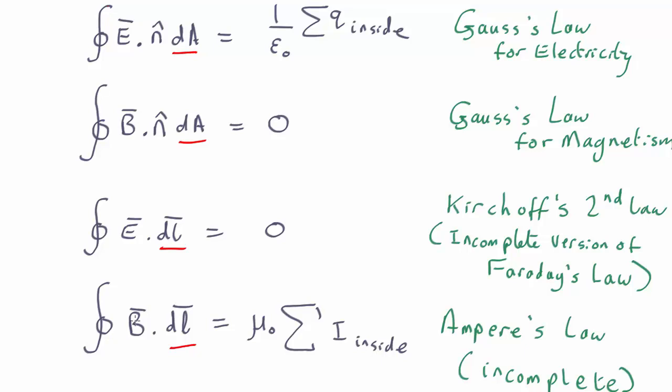And then you get the same thing for magnetic fields, which is that the integral, once again, around any closed loop of magnetic field times dl tells you the amount of current that goes through that loop. And that's called Ampere's law, though it too is also a little bit incomplete at the moment.